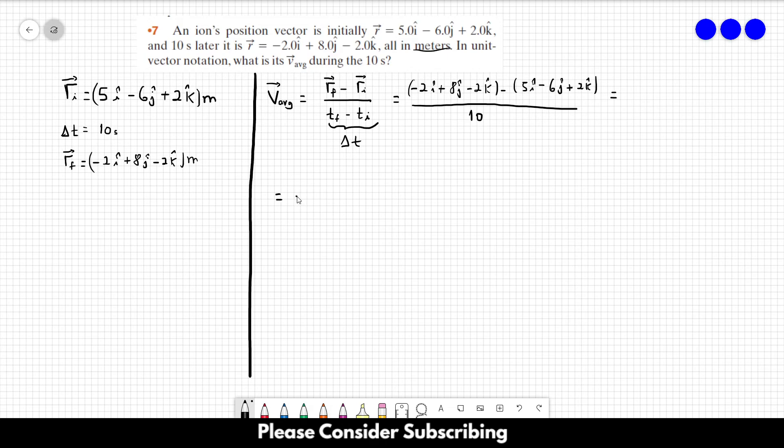So this is equal to minus 2i plus 8j minus 2k minus 5i plus 6j minus 2k over 10. And this is equal to minus 7i plus 14j minus 4k over 10.